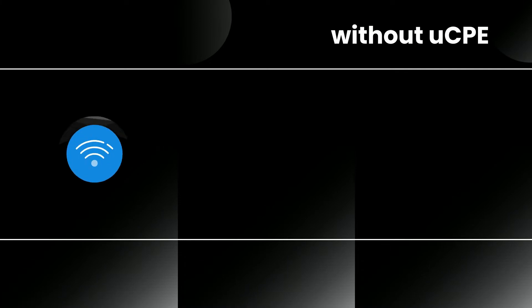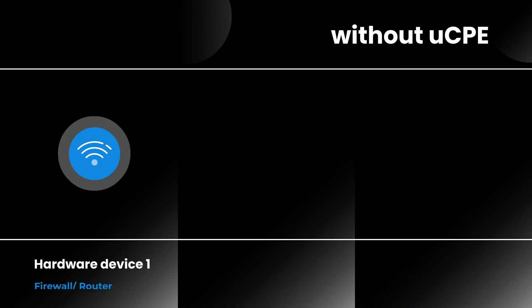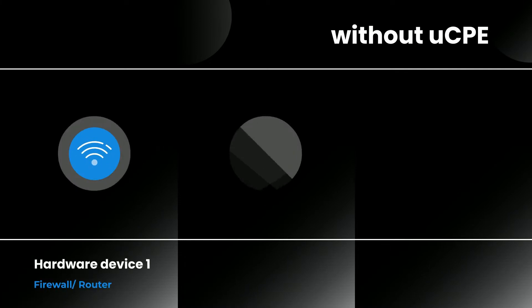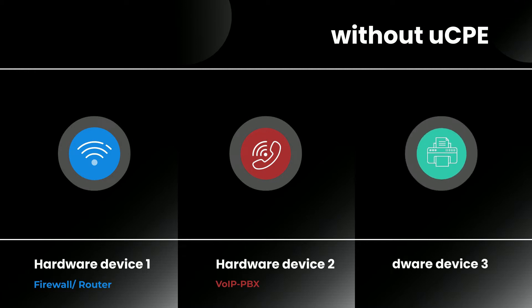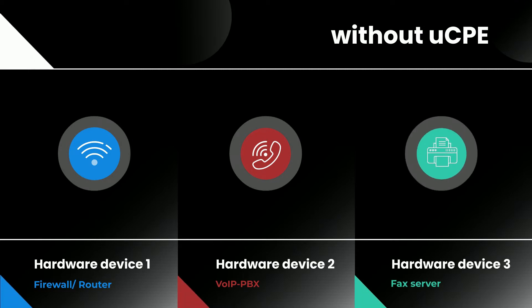Up to now, a specific network function has needed a special hardware device to deliver the service. So if a router, a VoIP PBX and a fax server are required, three devices would be necessary to be provided.